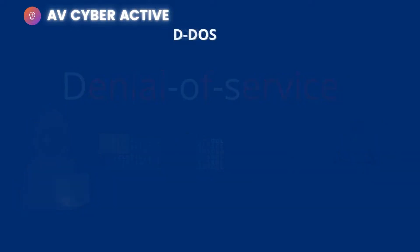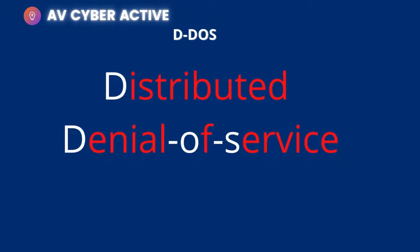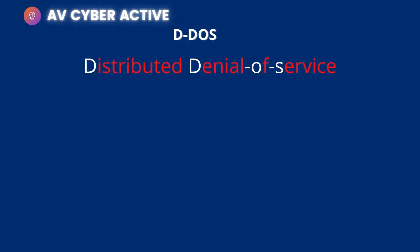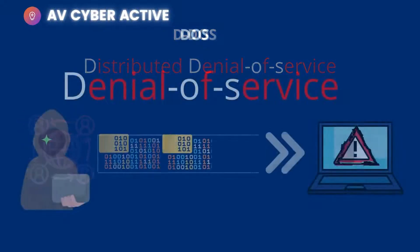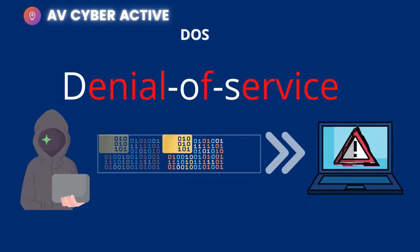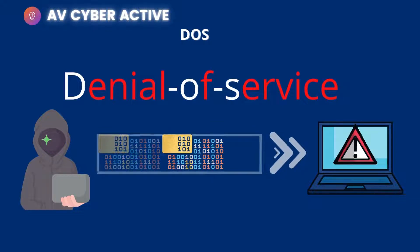Now, what's a DDoS? DDoS is distributed denial of service. To give an analogy, DoS is one-to-one and DDoS is many-to-one. In our previous example, the bad actor was trying to send malicious packets to the target server, but that was just one malicious actor — that's why we call it a DoS.